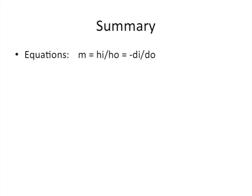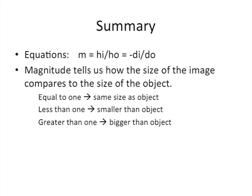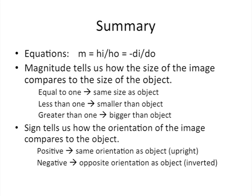In summary, we have two equations for calculating magnification: one using heights and one using distances from the lens. The magnitude tells us how the size of the image compares to the object: magnitude equal to 1 means same size; less than 1 means the image is smaller; greater than 1 means the image is bigger. The sign tells us about orientation: a positive sign means the image has the same orientation as the object, which is usually upright; a negative sign means the image has the opposite orientation, which usually means it's inverted, assuming the object was upright.